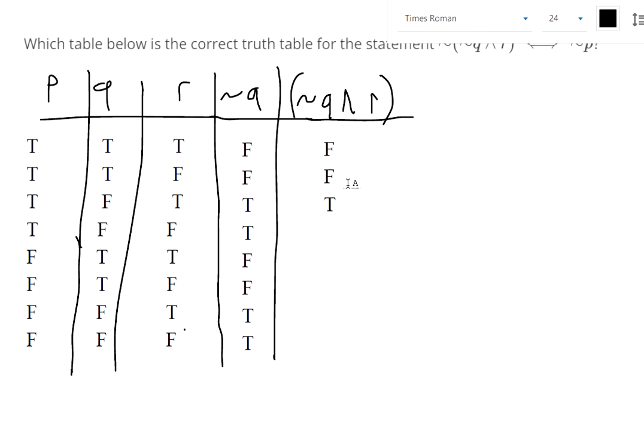Not both true. They're both true in the third row. Not both true, not both true, not both true. They're both true in the seventh row. So that is that column.